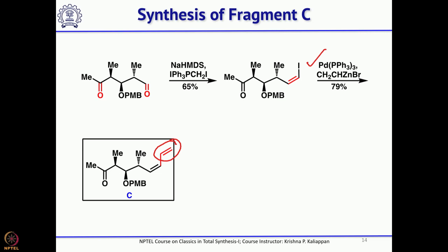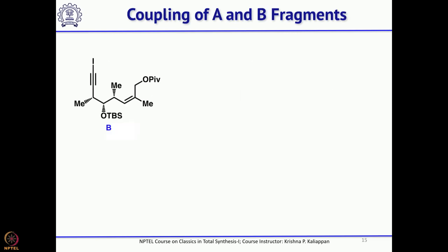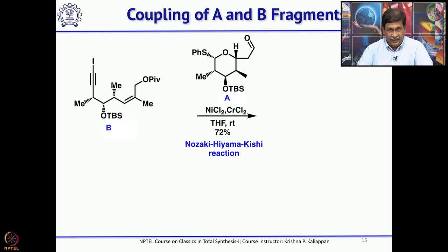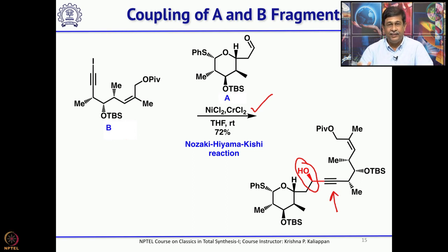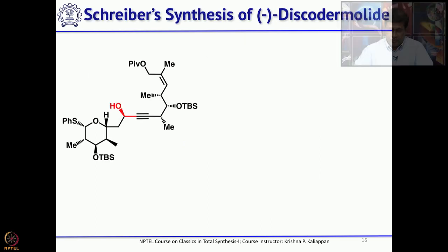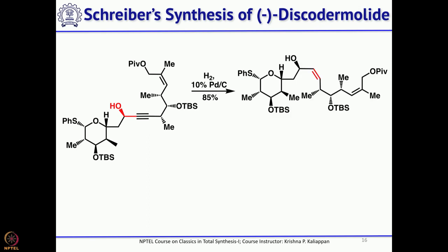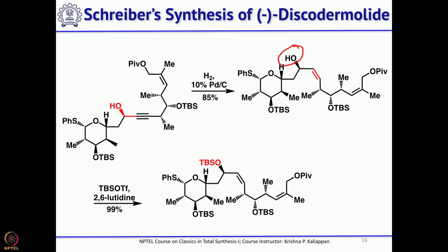All three fragments are now ready. Fragment B was combined with fragment A under Nozaki-Hiyama-Kishi conditions — this well-known reaction gives the corresponding alcohol, mainly one enantiomer. Next, a double bond was needed: since the triple bond can be selectively reduced in the presence of other double bonds, the propargylic alcohol was reduced to give the cis double bond. The newly formed hydroxyl group was protected as a TBS ether using TBS triflate and 2,6-lutidine.